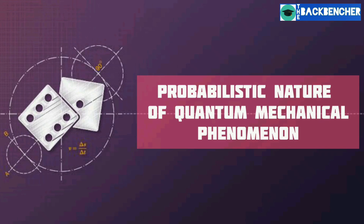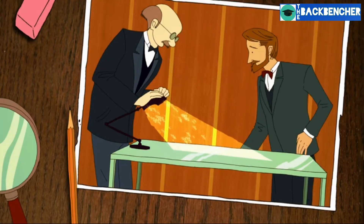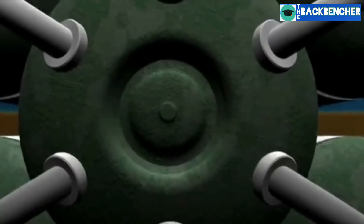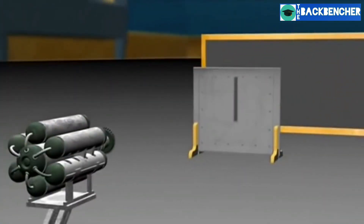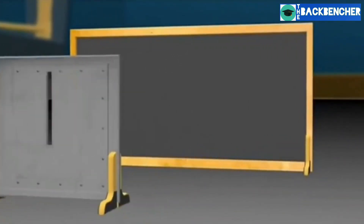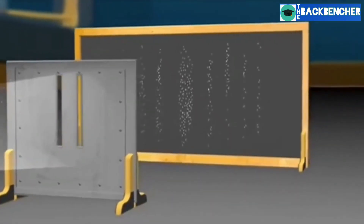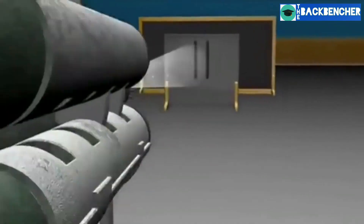This experiment was first performed by Thomas Young for the demonstration of wave behavior of light, because at that time it was thought that light consisted of either waves or particles. In the basic version of this experiment, a coherent light source — meaning light having the same type of source, such as a laser beam — illuminates a plate pierced by two parallel slits, and the light passing through the slits is observed on a screen behind the plate. The wave nature of light causes the light waves passing through the two slits to interfere.